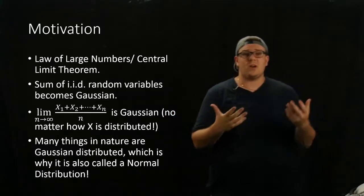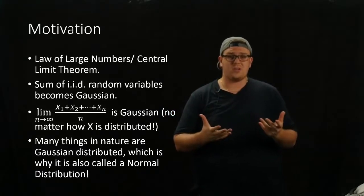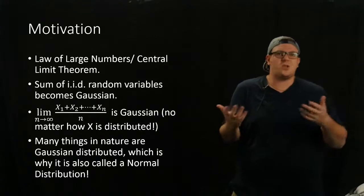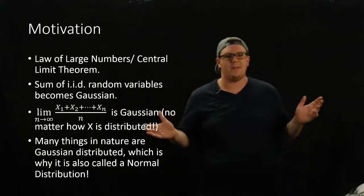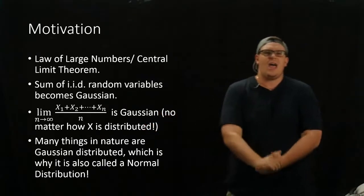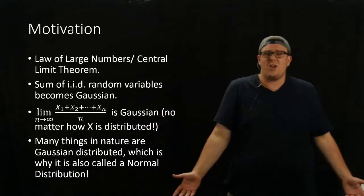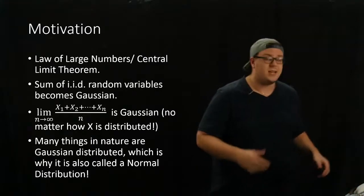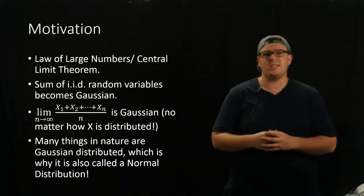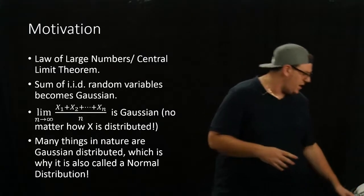Another reason that we use this is that many things in nature actually distribute in a Gaussian way. For example, the average number of particles hitting a point at a certain time is more than likely going to be Gaussian distributed. That's why it's also called the normal distribution — because it comes up all the time in nature, and it's really significant to study it.